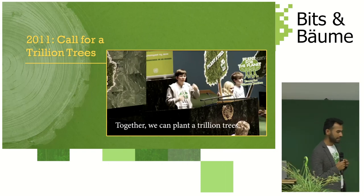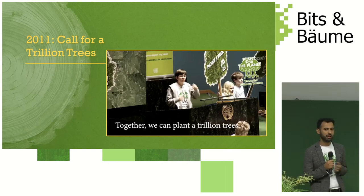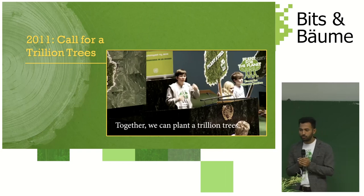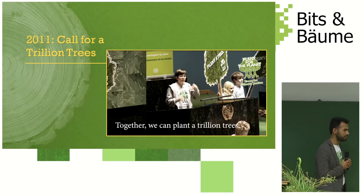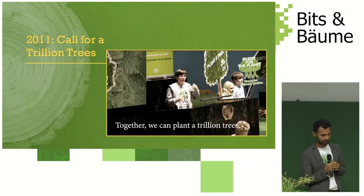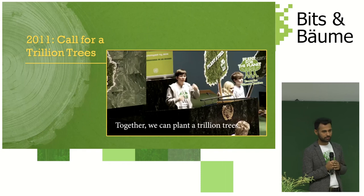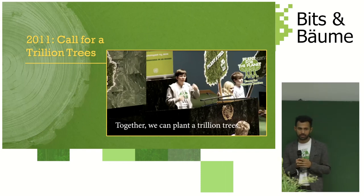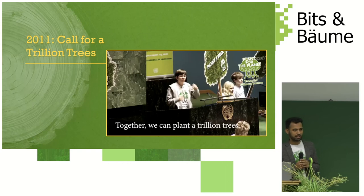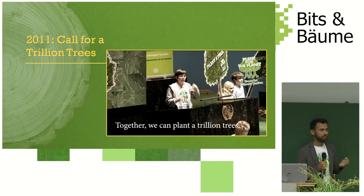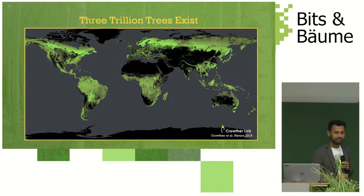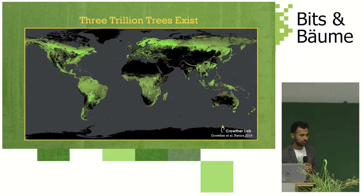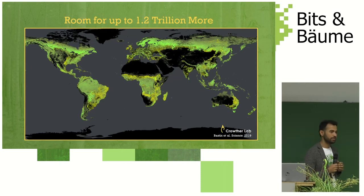In this process of planting trees and educating children, we called for a trillion trees in 2011. At the time we didn't know how many trees there were in the world — it was estimated around 400 billion. We wanted the number to be a symbol. But today we know there are 3 trillion trees on our planet, and research shows there is room for an additional 1.2 trillion more.